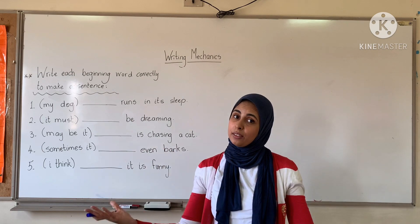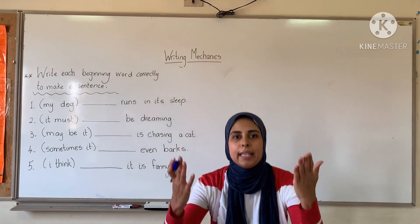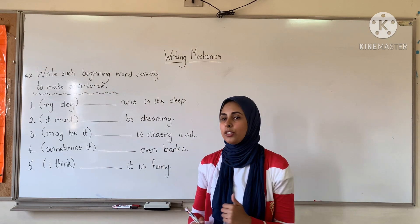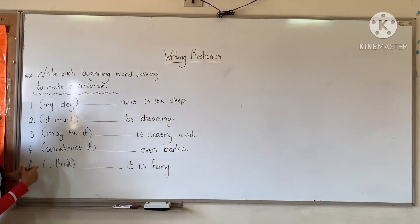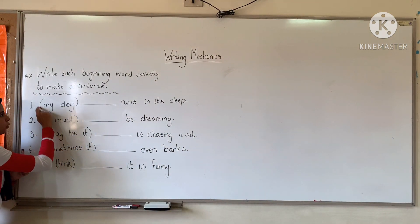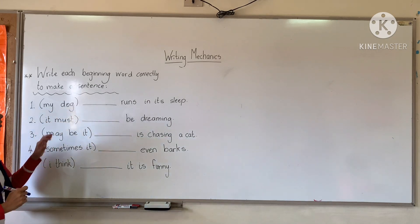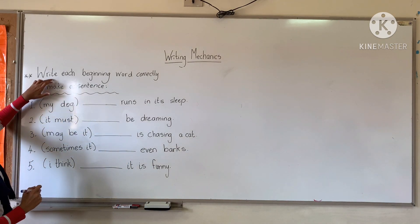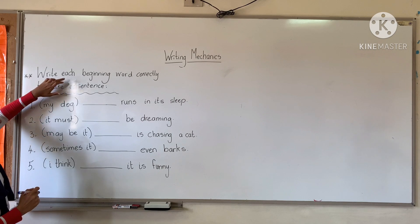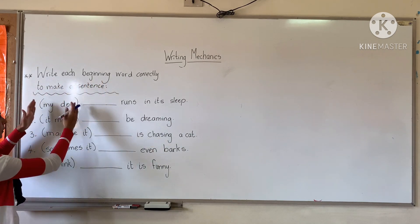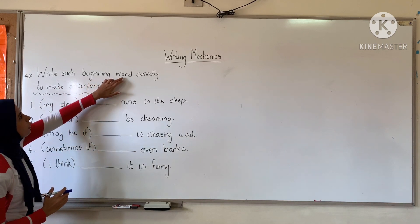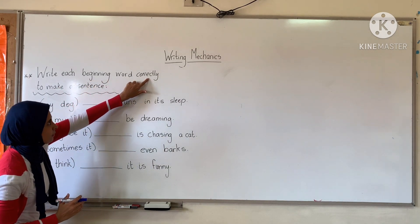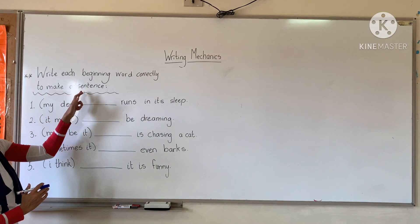How do you begin your sentence, Junior One? Yes, excellent — in a capital letter. Okay, let's see it together. Number one: between brackets, you have 'my dog.' The rubric wants me to write the beginning of the sentence, like 'my dog,' the beginning word correctly to make a sentence.